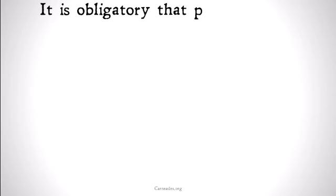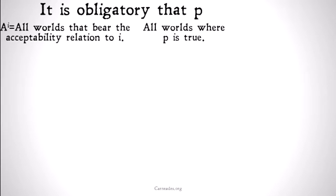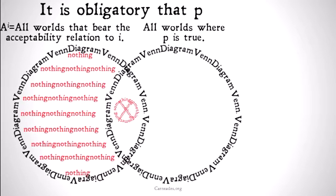It is obligatory that P — what does that mean? What's the semantics backing that up? We're going to have worlds in two categories: one that is the set of all worlds that bear the acceptability relation to I — that's AI. Acceptability means that if a world bears the acceptability relation to I, all obligations in I are true in that world. We're also going to have a category of all worlds where P is true. We're going to say there are no worlds that bear the acceptability relation to I where P is false — all worlds that bear the acceptability relation to I are also worlds where P is true.